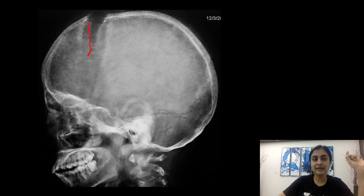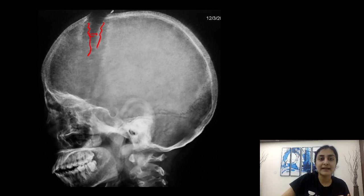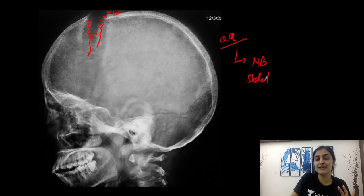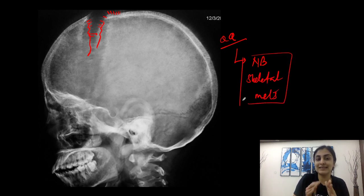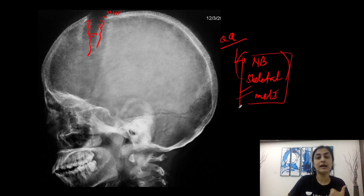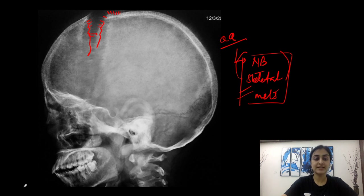In this X-ray, you can see widening and diastasis of the suture, but also a periosteal reaction like a hair-on-end — a spiculated hair-on-end reaction along with suture diastasis. In a child, we must always consider neuroblastoma skeletal metastasis. When there is focal suture diastasis with hair-on-end periosteal reaction, we think of neuroblastoma, which has a very high tendency to produce bony metastasis to the skull near the sutures.